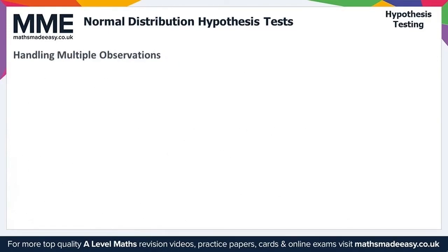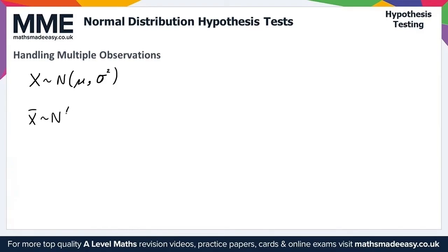Let's take a look now at handling multiple observations. If we are given multiple observations on which to base our hypothesis test, then we can produce a more accurate result, and as a result we would have a larger critical region. If we have a normally distributed variable X — defined as a normal distribution with mean mu and variance sigma squared — then the average of n observations of X has the distribution X-bar, which is a normal distribution with mean mu and variance sigma squared divided by n.